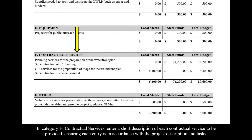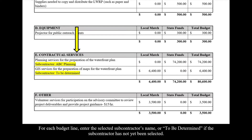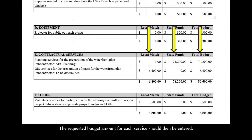In Category E, Contractual Services, enter a short description of each contractual service to be provided, ensuring each entry is in accordance with the project description and tasks. For each budget line, enter the selected subcontractor's name, or 'to be determined' if the subcontractor has yet to be selected. The requested budget amount for each service should then be entered.